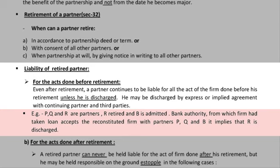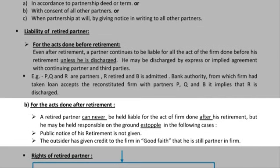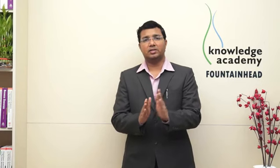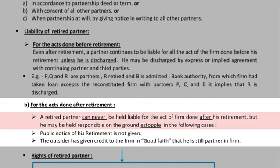Example: PQR are partners, R retired, and B is admitted. The bank authority from which the firm has taken a loan accepts this reconstituted firm with partners P, Q, and B — implying R is automatically discharged. For acts done after retirement: a retired partner can never be held liable for any act of the firm done after his retirement, as already discussed.